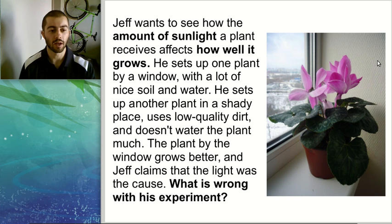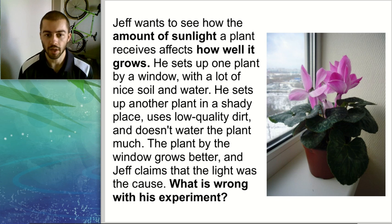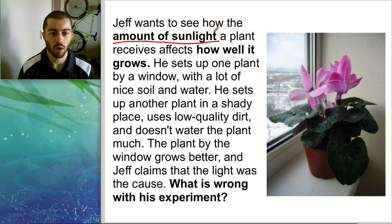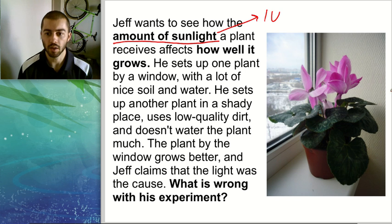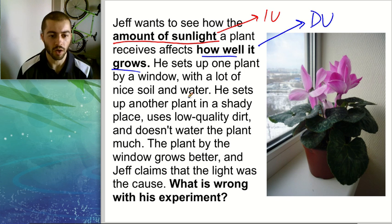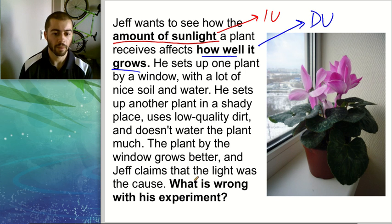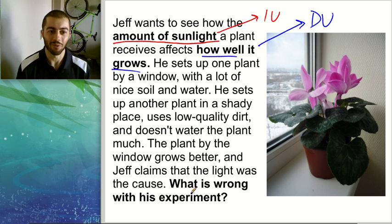Here's a practice question — pause the video and try to answer it on your own. Jeff is trying to see how the amount of sunlight affects how well a plant grows. The amount of sunlight is the independent variable, and how well it grows — measured by the height of the plant — is the dependent variable. He takes one plant by the window with a lot of healthy soil and water, and sets up another plant in a dark corner with rocky dirt and not much water. The plant by the window grows better, and Jeff says it's definitely because of the light. What's wrong with this experiment?